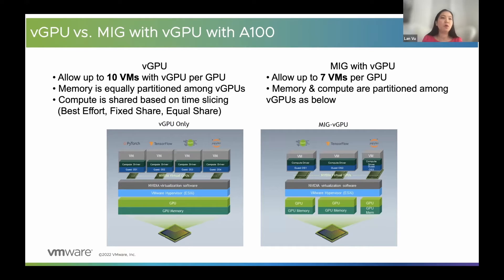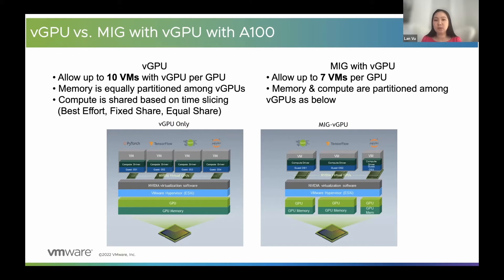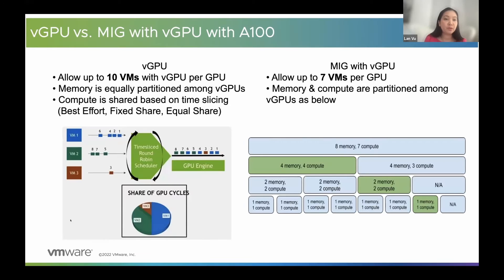In case of A100, vGPU enables up to 10 VMs per physical GPU. And with this option, memory is equally partitioned among vGPUs. For example, with A100, for the GPU memory, we can have 10 VMs and each VM can have 4 GB per VM. All the VMs will share the GPU resources based on time slicing. In case of MIG, which is Multi-Instance GPU, it allows up to 7 VMs per GPU. Similar to vGPU, memory is also partitioned among different VMs sharing the same physical device. In terms of compute, it's not based on time slicing, but it also partitions the compute units inside the GPU among VMs as well.